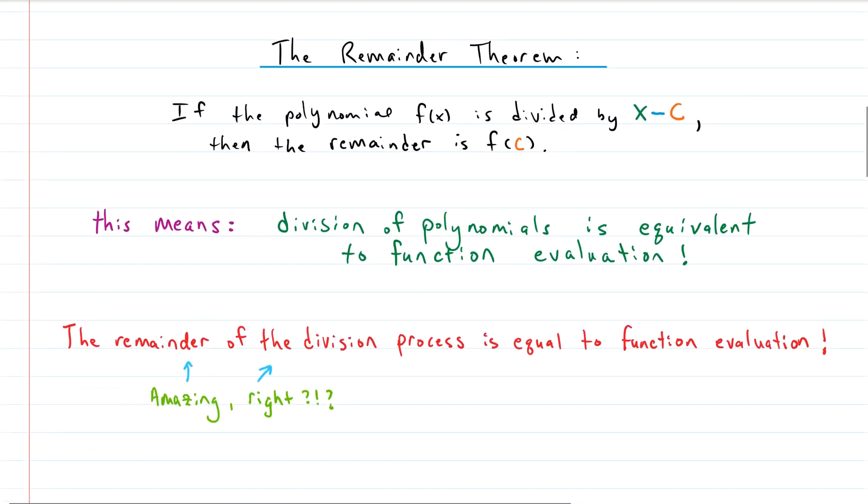All right, the remainder theorem. What is the remainder theorem? Here it is in all of its glory. Two lines. Nice, huh? If a polynomial that we call f is divided by x minus c, where x is the variable and c is just some constant, then the remainder is equal to that function evaluated at c, which is this constant. That is craziness right there. Because what this really means is the division of polynomials is equivalent to function evaluation. That is mind-blowing.